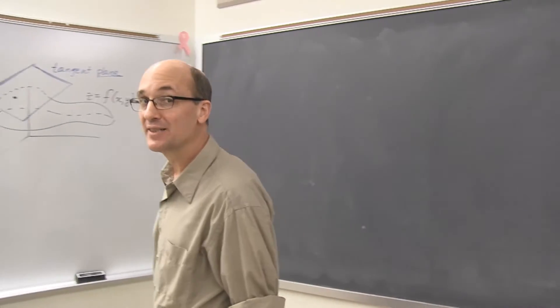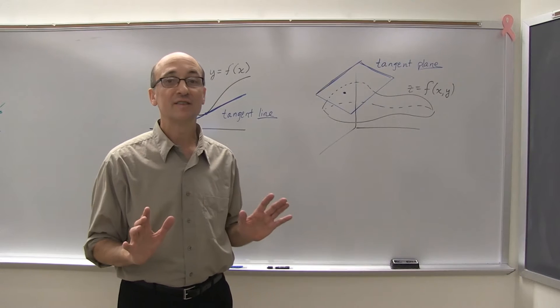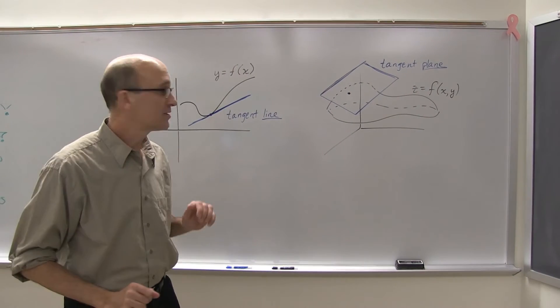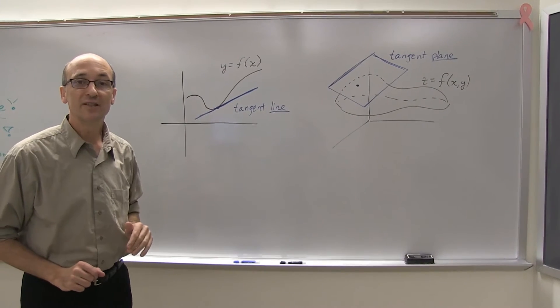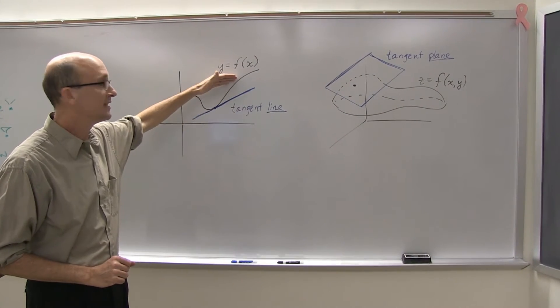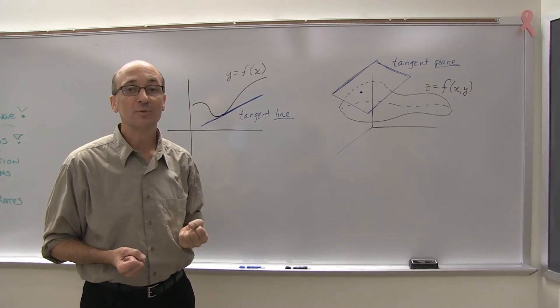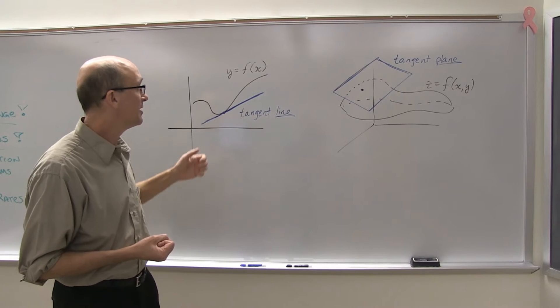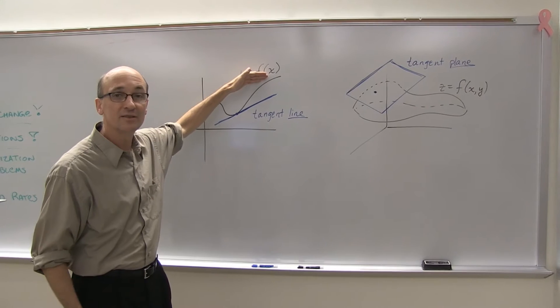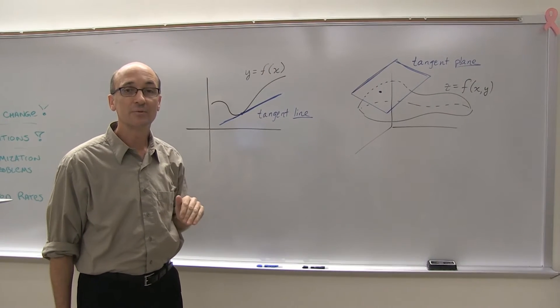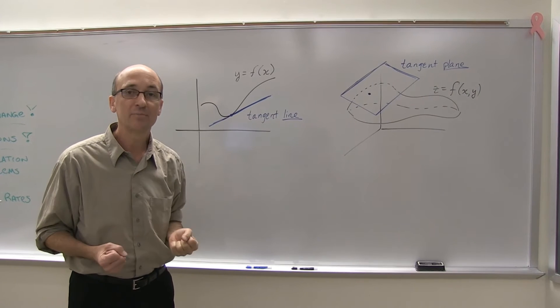What differential calculus is about is flat approximations to curved things. Most of calculus one is about tangent lines to graphs of functions. That's the flat approximation, that's the curved thing. The power of calculus one and the use of derivatives comes from the simplicity of the tangent line. It is a simple thing compared to the complicated thing that you're trying to work with. This simple thing gives you the handle on the more complicated thing.